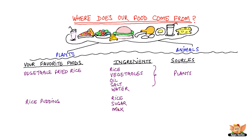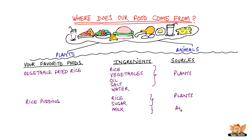Similarly, if you have rice pudding, we use rice, sugar and milk to make the pudding. In this, rice and sugar are sourced from plants, while milk comes from animals — it comes from cow or buffalo.